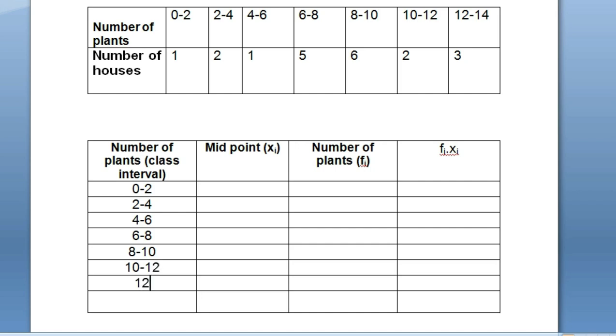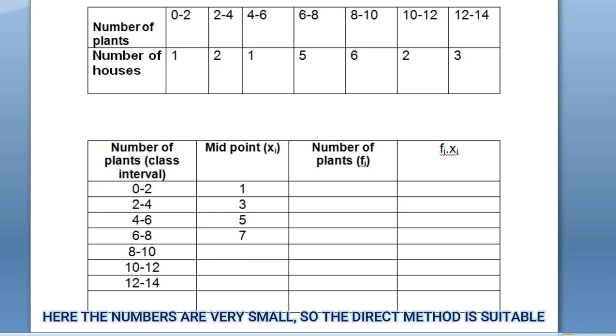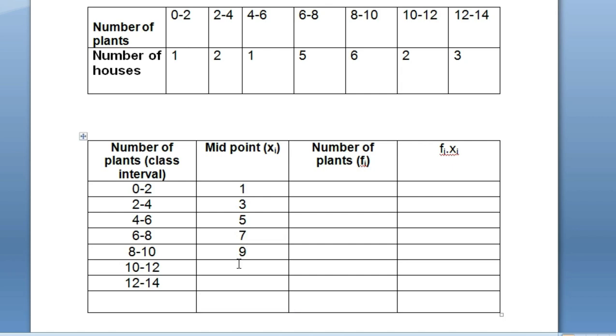We have to find the midpoints. How is the midpoint found? We have to add the lower limit and the upper limit and divide it by two. Here, zero plus two is two; if you divide it by two, then we'll get one. The length is two, so we can add it by two: one, then three, then five, then seven, then nine, then eleven, then thirteen.